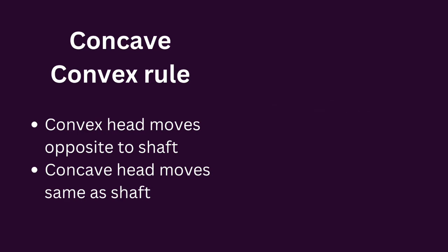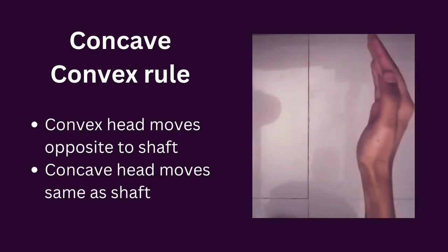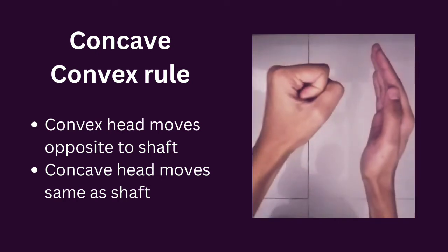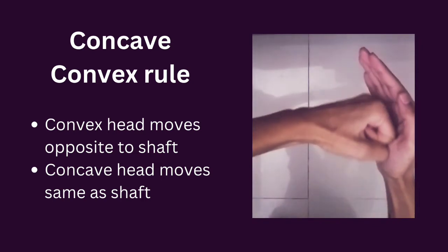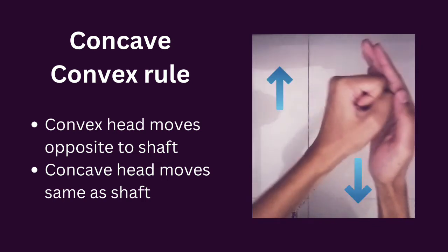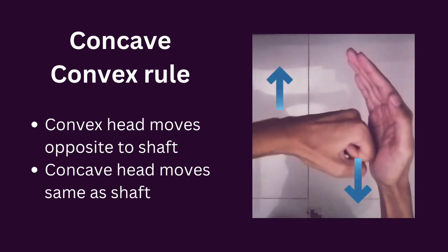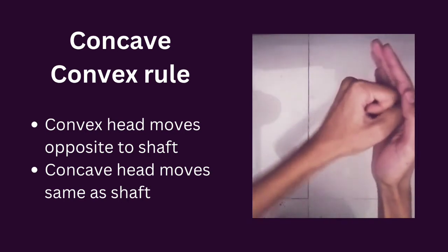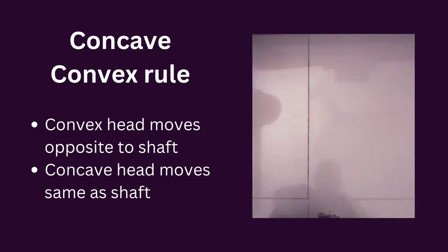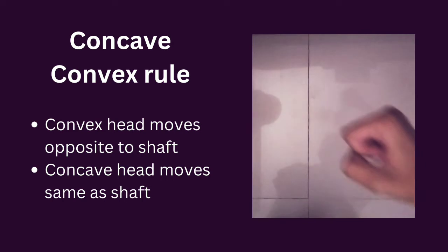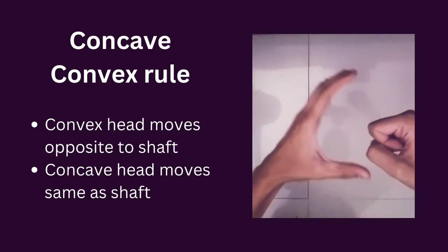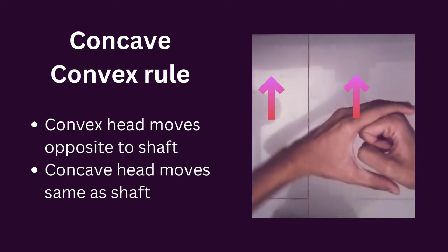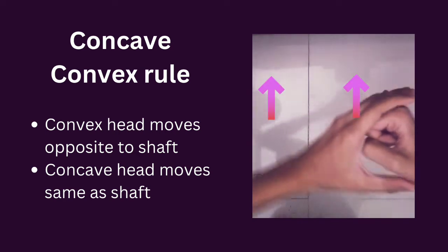The concave-convex rule: when the fixed end is concave and the moving end is convex, then the convex head moves opposite to the shaft.